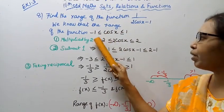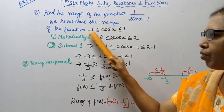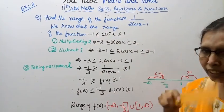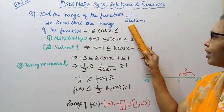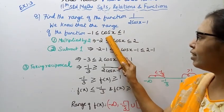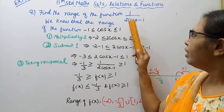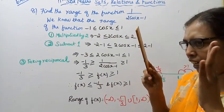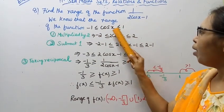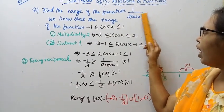Minimum range: cos x lies between -1 and 1. That is, -1 ≤ cos x ≤ 1. This is the range of cos x. So, -1 ≤ cos x ≤ 1. Now, when we look at the denominator, we apply this.